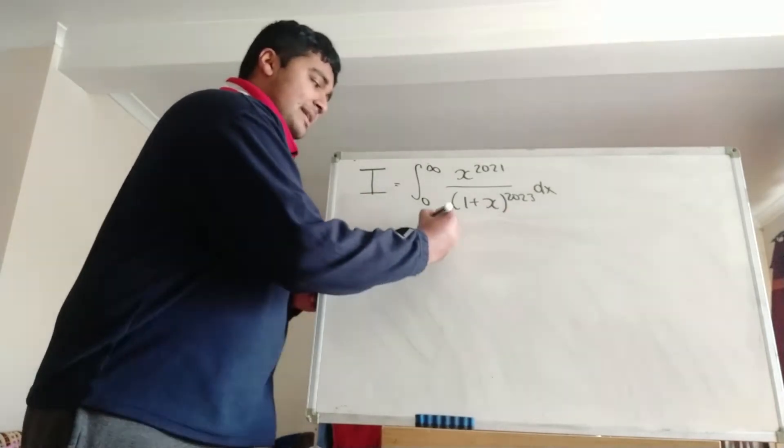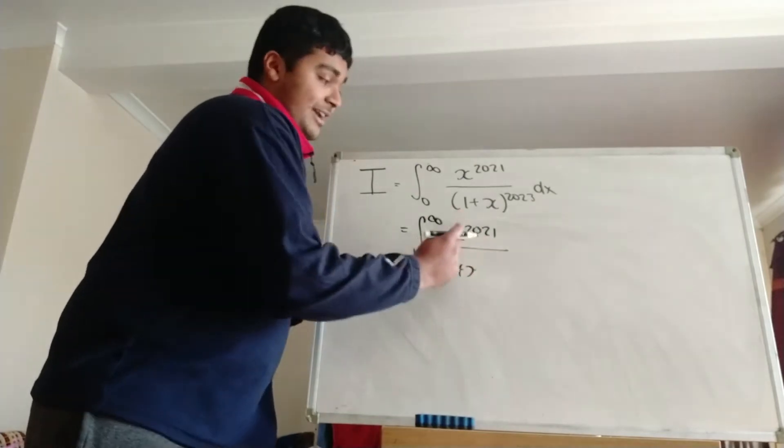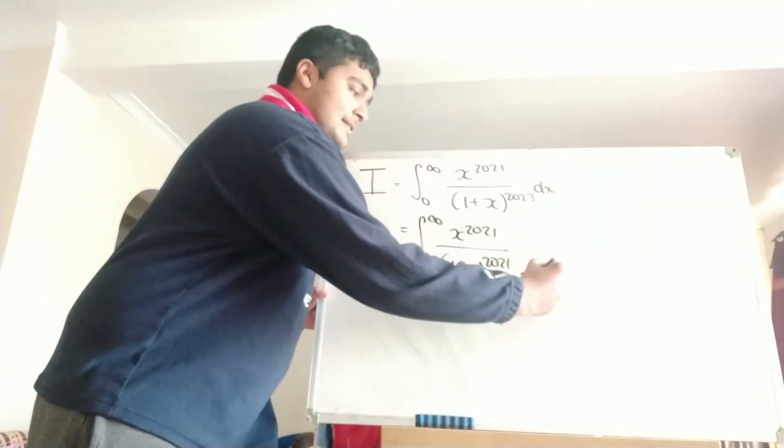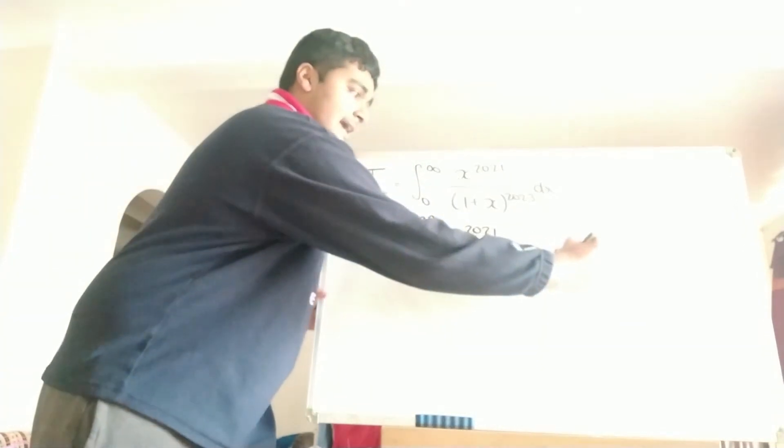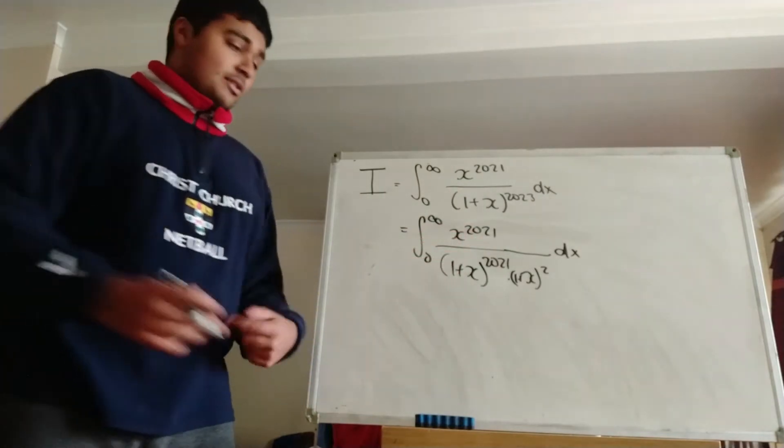So that way we'll get 2021 on the top and the bottom. So x to the 2021 divided by 1 plus x to the 2021 times 1 plus x squared, like so. And now we can bring this 1 plus x and this x together because they're both to the 2021.